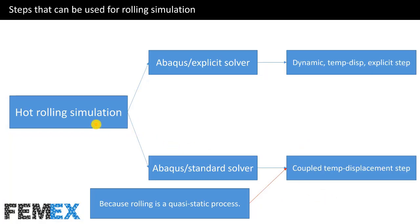For hot rolling simulation, you can use both Abaqus Explicit and Abaqus Standard solvers as well. Note that if you want to simulate hot rolling, it takes more physical memory and the simulation takes more time to complete. You must use the coupled temp-displacement step, which you can use because rolling is a quasi-static process. Both of these steps solve the stress field and temperature field simultaneously.